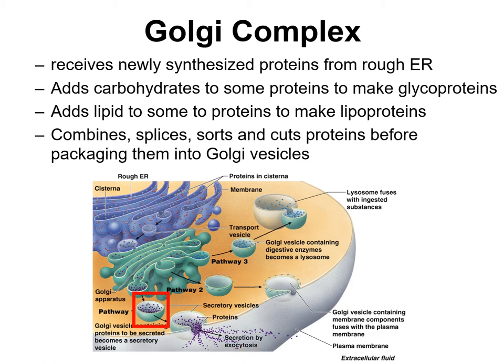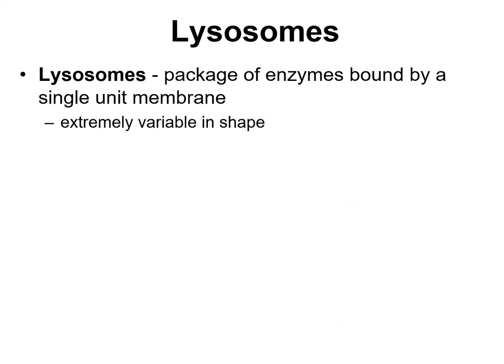That process is exocytosis. If those proteins are plasma membrane proteins, phospholipids, or other components of the plasma membrane, the vesicle merges with the plasma membrane and those components are incorporated into it. On the other hand, if those proteins were digestive enzymes, they would be packaged in a vesicle, and that vesicle would become another organelle called a lysosome.